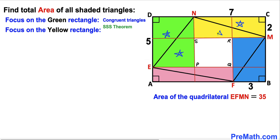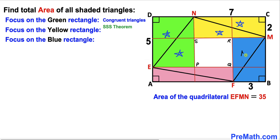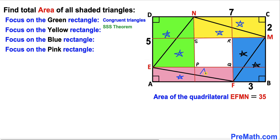Now let's focus on the yellow rectangle — we get two congruent right triangles with the same area. Focusing on the blue rectangle, once again these two triangles have the same area. And finally, in the pink rectangle, the area of one triangle is equal to the area of the other triangle.